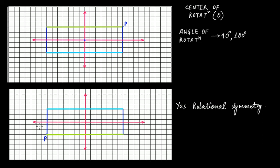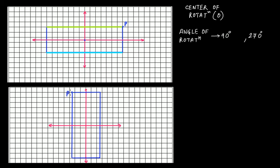From this position we again move it by 90 degrees. So the total angle from the start is now 270 degrees in the clockwise direction. This point P has reached this new position. At 270 degrees, do we have rotational symmetry? No — these figures are not the same, therefore again we don't have any rotational symmetry.